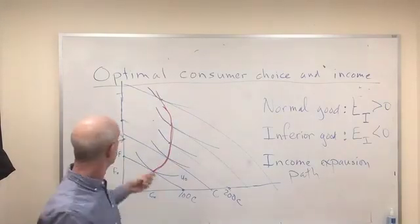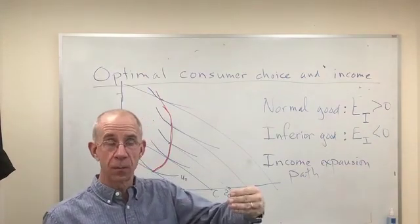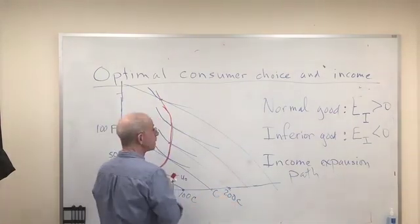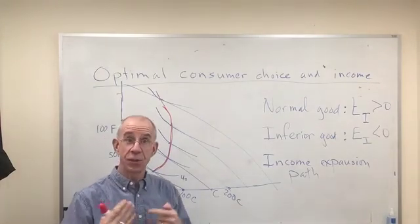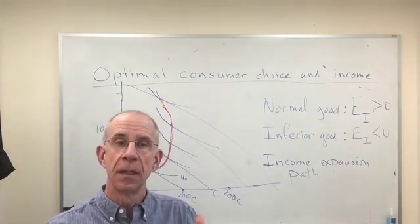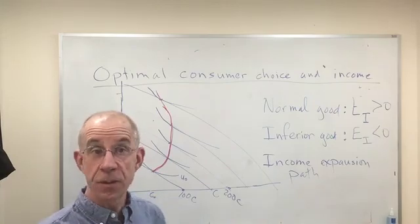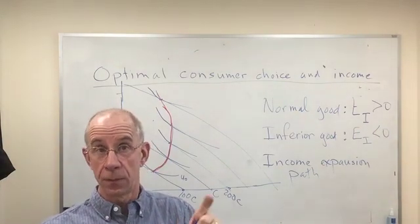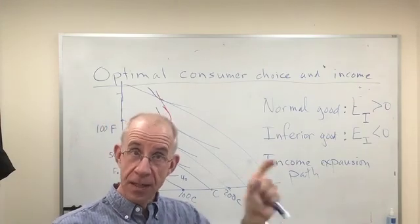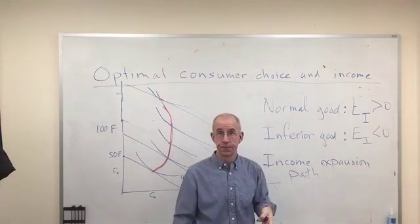In fact it could be the case that if we increase income enough that clothing becomes an inferior good. As income reaches a high enough level you start to actually buy less of it. The reason I mention this is that the income elasticity of demand can change at the level of income. If you look at the definition of that in the other video you'll see that the definition of the income elasticity very much depends on the particular combinations of income and demand. As those change, as those increase, you can have a move from a normal to an inferior good.